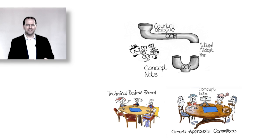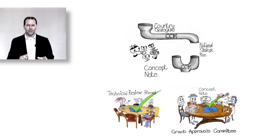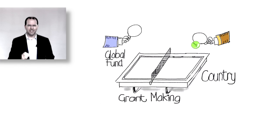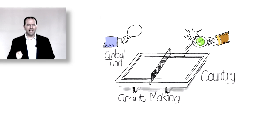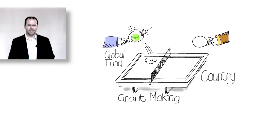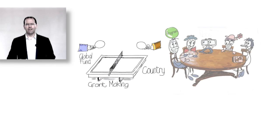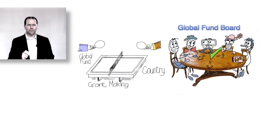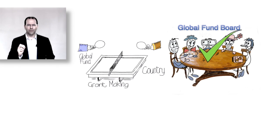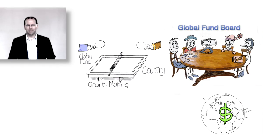If the interventions and the funding are approved by these two bodies, then the process of discussion and negotiation as to how the program will actually work will take place. This stage is called grant making, and this happens before the Global Fund Board sign off on the final grant. Once the Board have signed off, money will be made available for implementation.